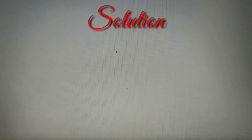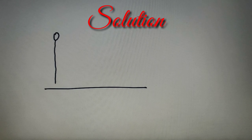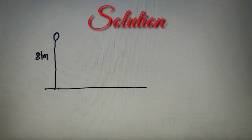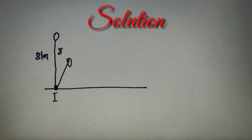Let's check the solution. According to our given question, a ball is dropped from a height of 81 meters to the ground. Let us first draw our ground and assume this is our ball, with the distance from here to the ground equal to 81 meters. According to the question, the ball rebounds after striking the ground. The first distance of the first bounce is equal to 81 meters, so after the first bounce the ball will reach a height of 81 × (2/3) = 54 meters.